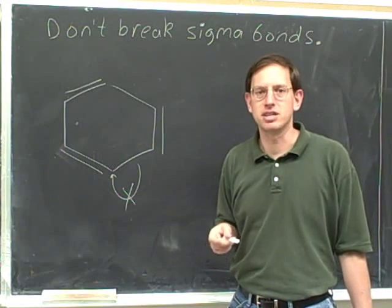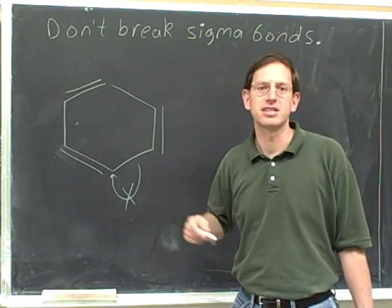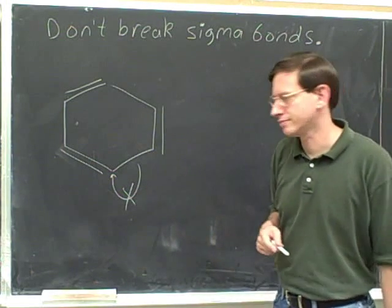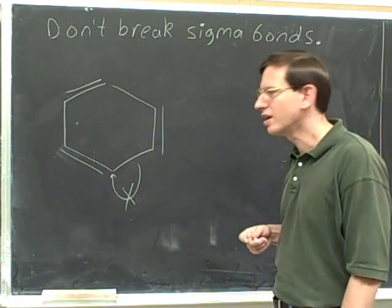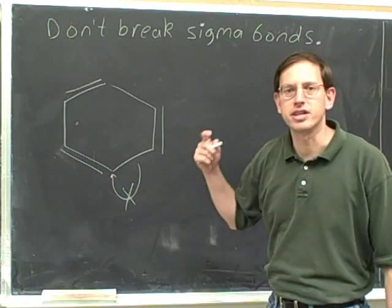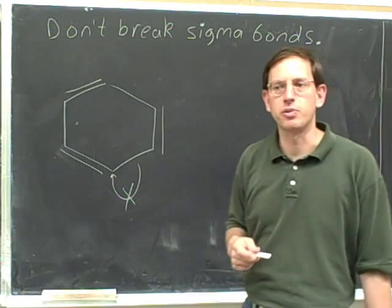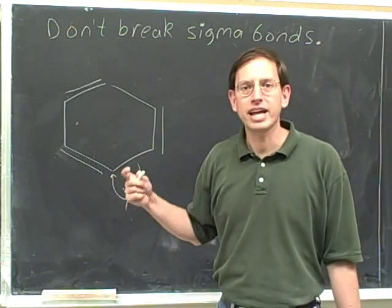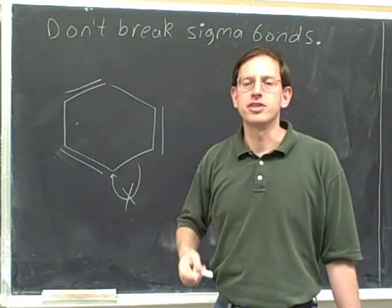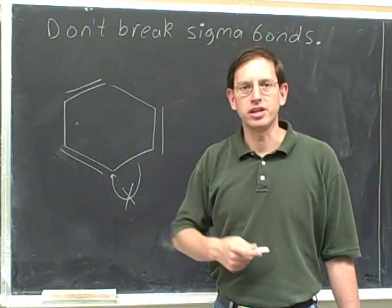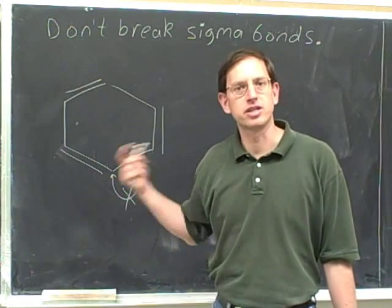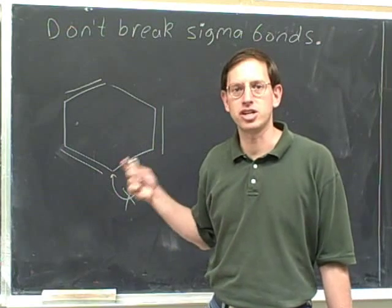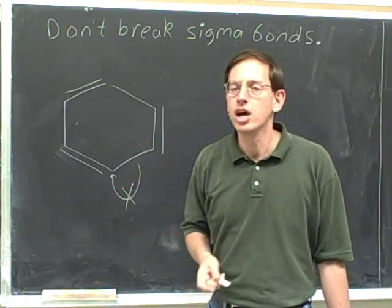If you were doing a reaction mechanism, it would be fine to have the tail on a single bond. In a reaction, the starting material is changing into the product.